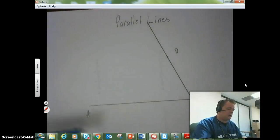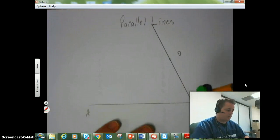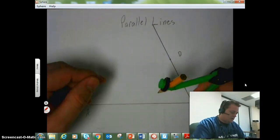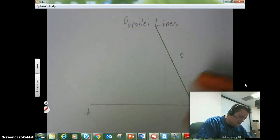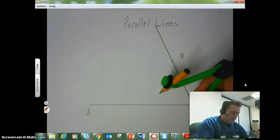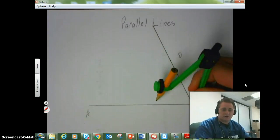This is where the similarities between copying an angle come into play here. What we did in copying angles is I placed the point of my compass at the vertex of the angle. And that's essentially what we have right now is we have an angle, and we want to copy the angle.